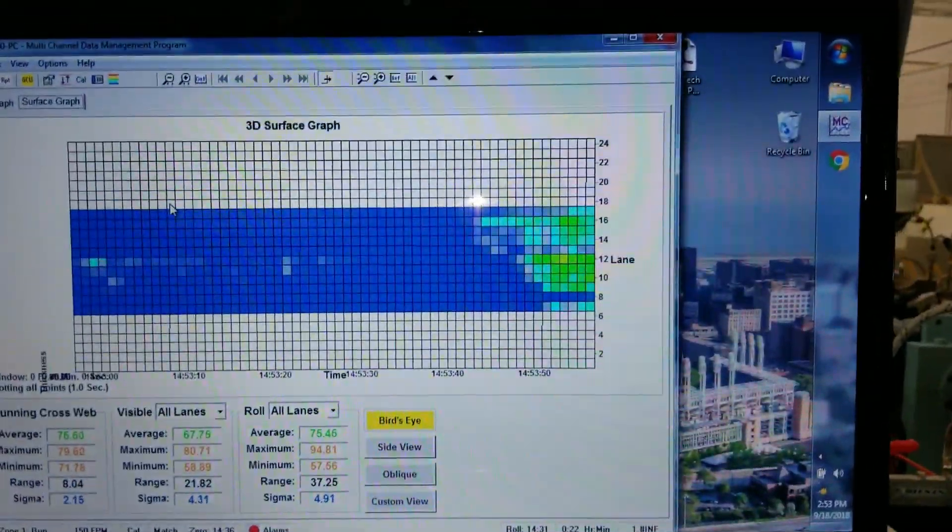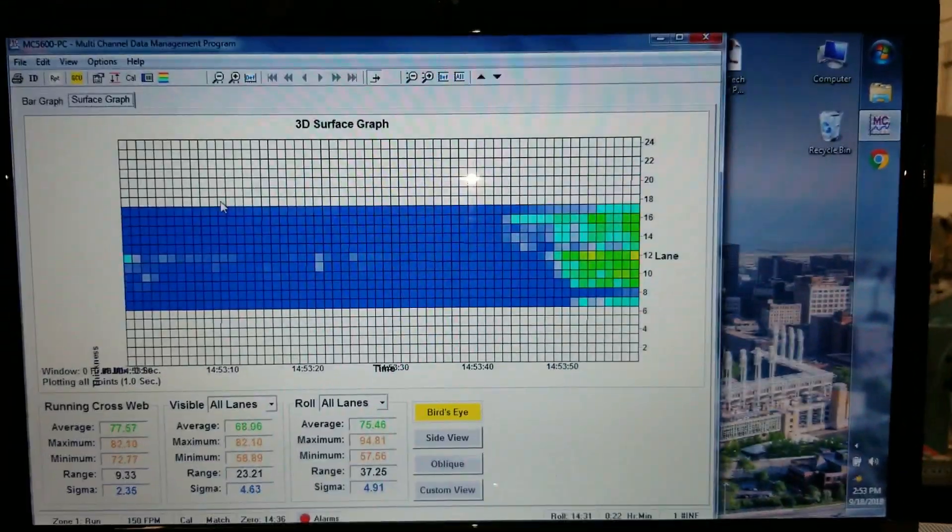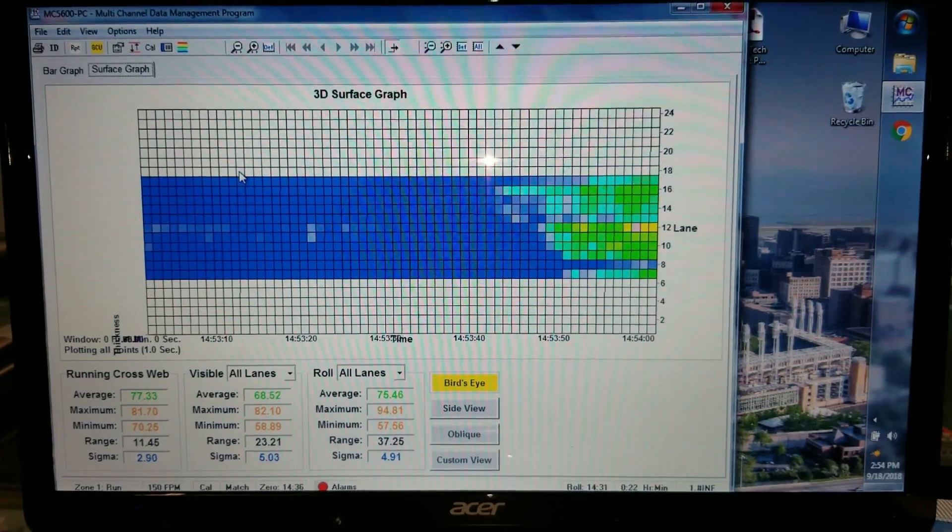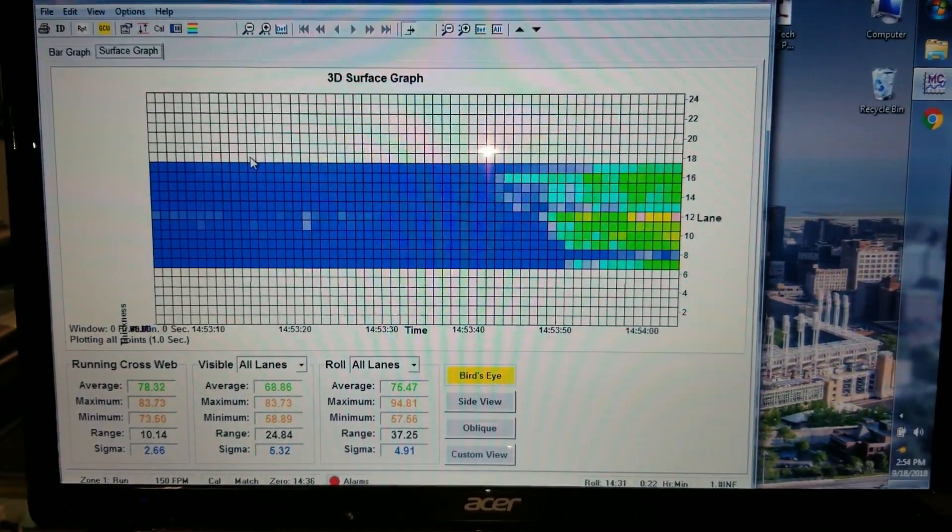The system is simultaneously measuring 24 areas all at once. You can see now that the thickness has changed and it's in the green range which means it's on target.